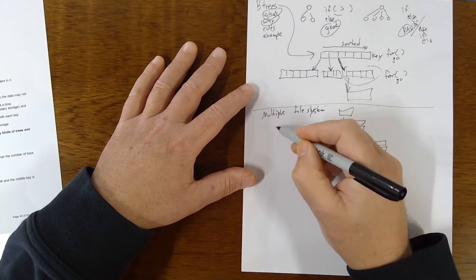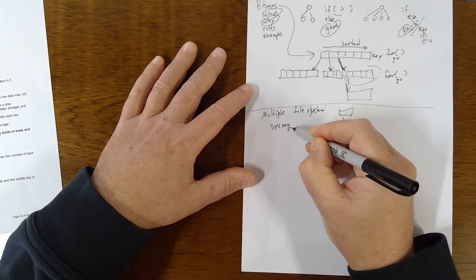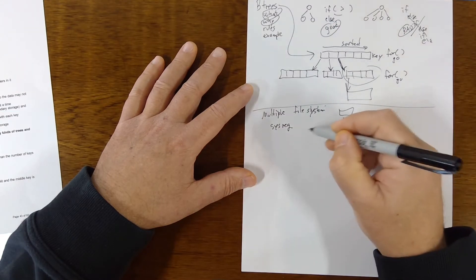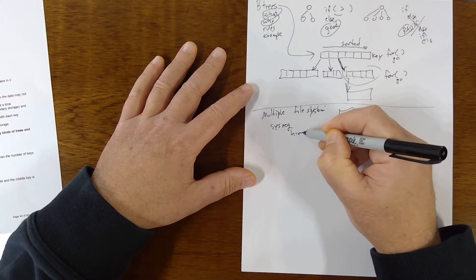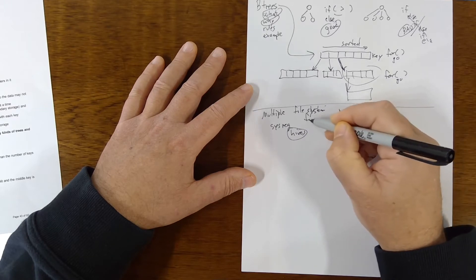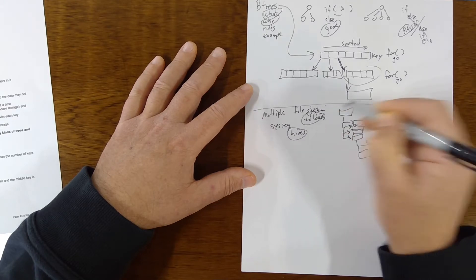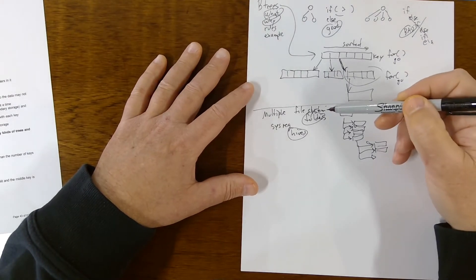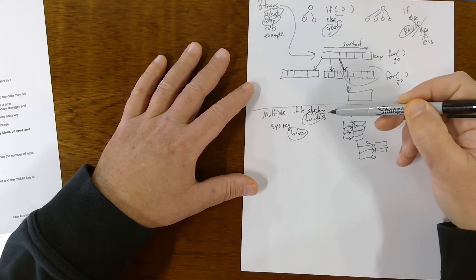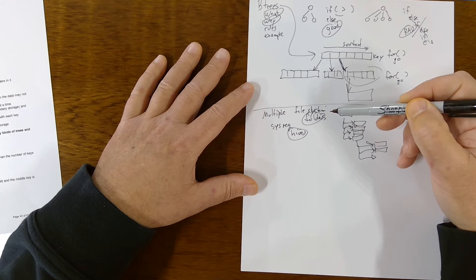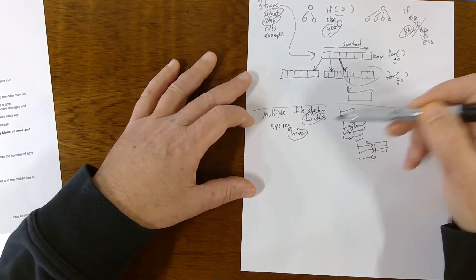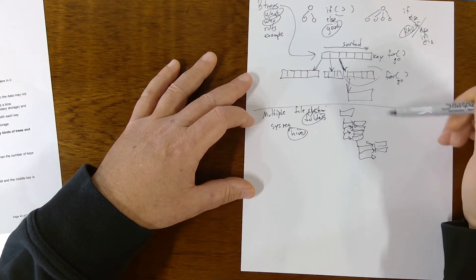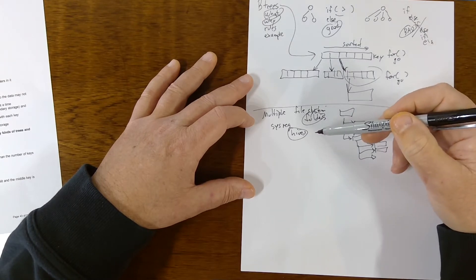There's also the system registry in Windows, which has a similar structure. And instead of folders, they call that hives. Folders and hives, just different names for the nodes in here. So this is the classic example of a kind of data that naturally falls into this sort of B-tree structure - files and system registries.